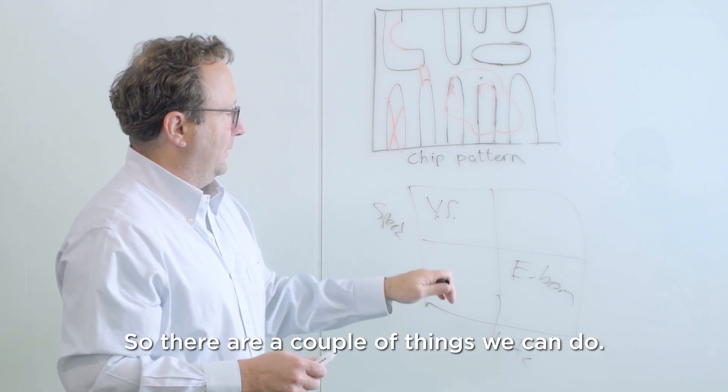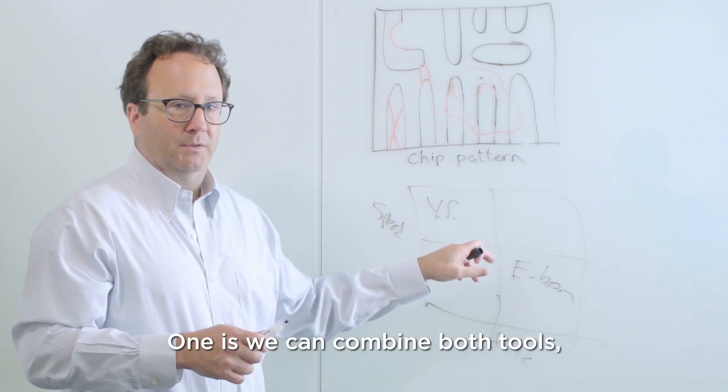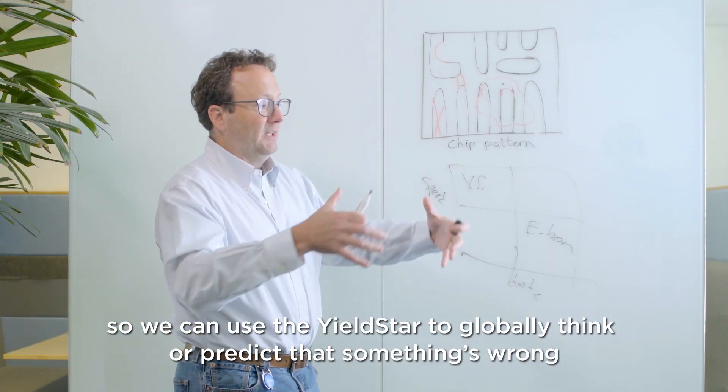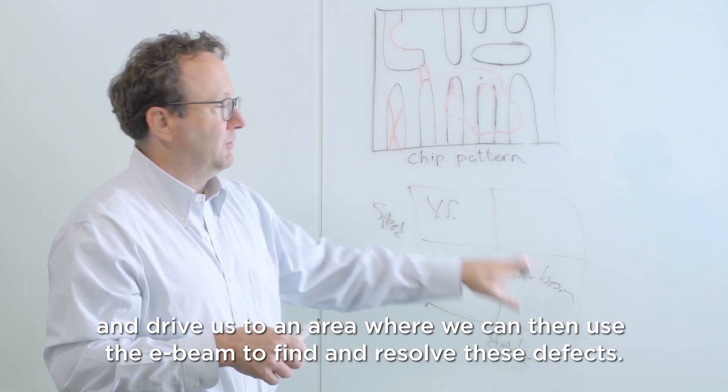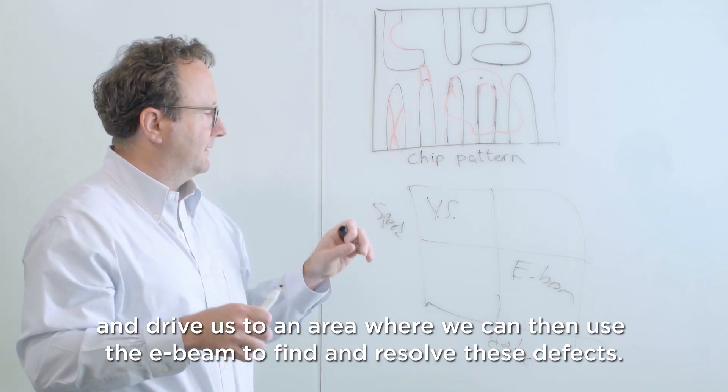So there's a couple things that we can do. One is we can combine both tools. So we can use the yield star to globally think or predict that something's wrong and drive us to an area we then can use the e-beam to resolve that area to find these defects.